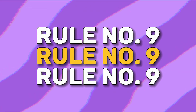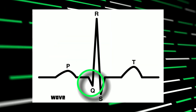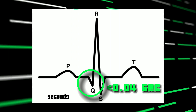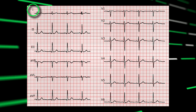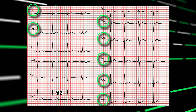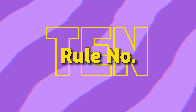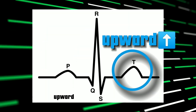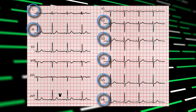Rule number 9: there should be no Q wave, or only a small Q wave less than 0.04 seconds in width, in leads 1, 2 and V2 to V6. Rule number 10: the T wave must be upward in leads 1, 2 and V2 to V6.